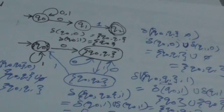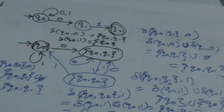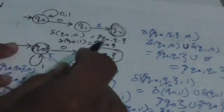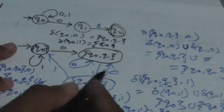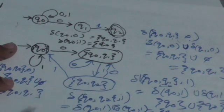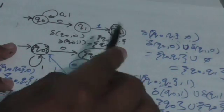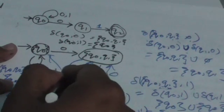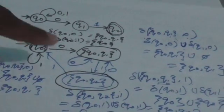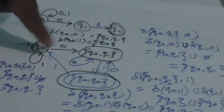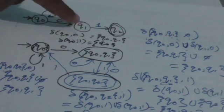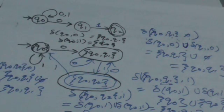Now we need to find the final states of this DFA. The NFA has a final state q2. Check which states of the DFA contain the final state of the NFA — if any DFA state contains q2, make it a final state. The state {q0, q2} contains q2, so we make it the final state of the DFA. This DFA is equivalent to the NFA — any string accepted by the NFA will be accepted by this DFA, and any string rejected by the NFA will be rejected by this DFA.